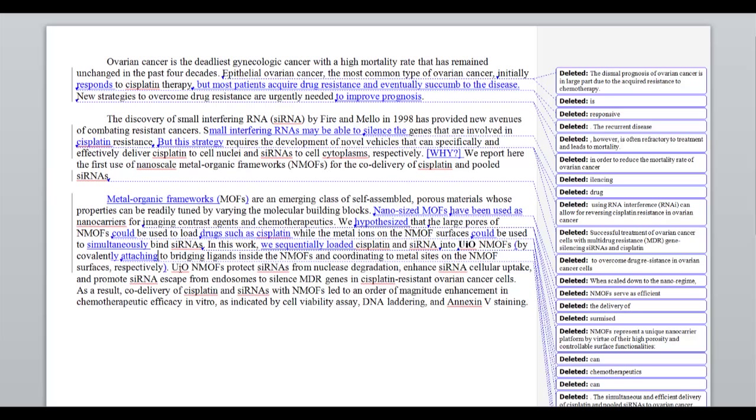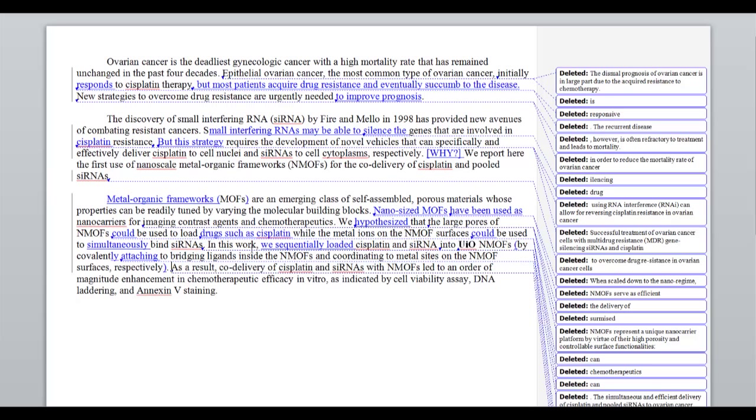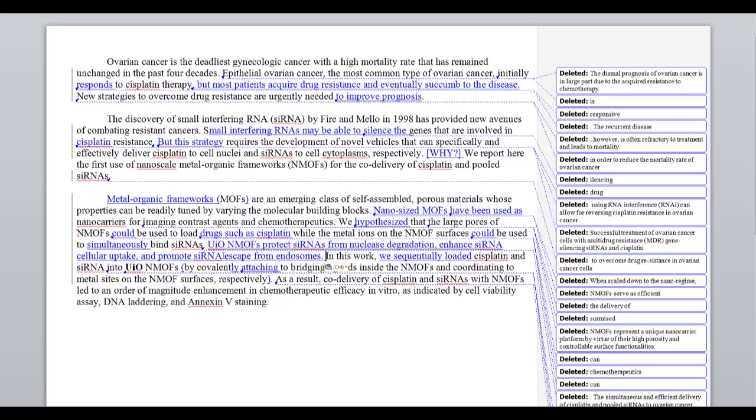And now I get to the next sentence. And it says that these NMOFs protect siRNAs from nuclease degradation, enhance cellular uptake, and promote its escape from endosomes to silence MDR genes in cisplatin-resistant ovarian cancer cells. Guess what? Again, we don't need to repeat that idea that's already been established. So trust the reader that they can infer that. This is a nice parallel sentence. We get protect from, enhance and promote. So protect, enhance, promote. That's all nicely parallel. The only question I had in reading this sentence is I think that these are not experiments that have been done. In other words, I don't think that the authors have done experiments to prove that these things are true. I think that these might just be the author's speculation about how these things would work.